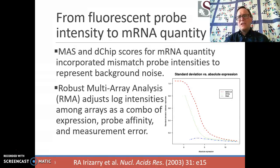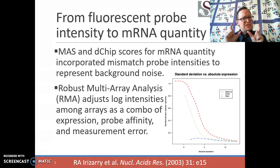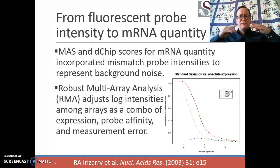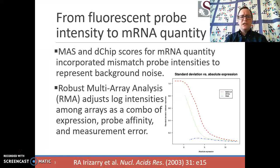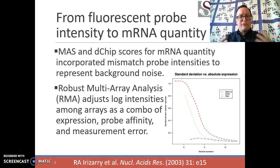There are some early approaches like MAS and dChip, which made use of something called a mismatch probe. These were cases where we had a 25-mer that was a correct sequence from a particular transcript, and another 25-mer just like it except that right in the middle there was a nucleotide that would not match the biological sequence. The idea was that these mismatch probes would give us some notion of how much background annealing was taking place, causing all the signals to be positive even if nothing was there.